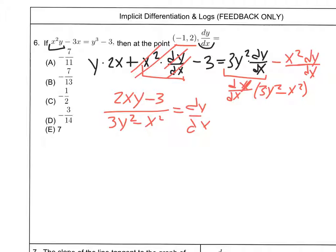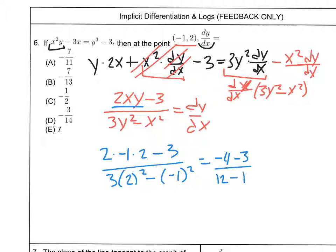One of the issues I saw here was not taking the derivative, just plugging the points in, which does not work. As soon as you take the derivative you could plug the point in. So we've got 2 times negative 1 times 2 for 2xy, minus 3, over 3 times 2² minus negative 1². That's going to be 2 times negative 1 times 2 is negative 4, negative 4 minus 3, 3 times 2² is going to be 12, and that's going to be minus positive 1. Negative 7 over 11.